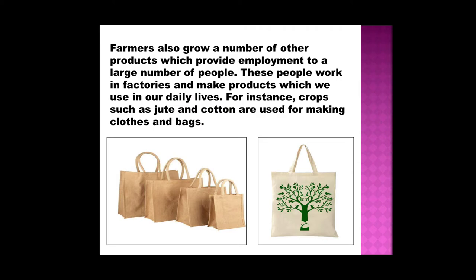Farmers also grow a number of other products which provide employment to a large number of people. These people work in factories and make products which we use in our daily lives. For instance, crops such as jute and cotton are used for making clothes and bags. Farmers produce jute and cotton, and those working in factories bring the raw material from the farmers and produce the finished materials for us.